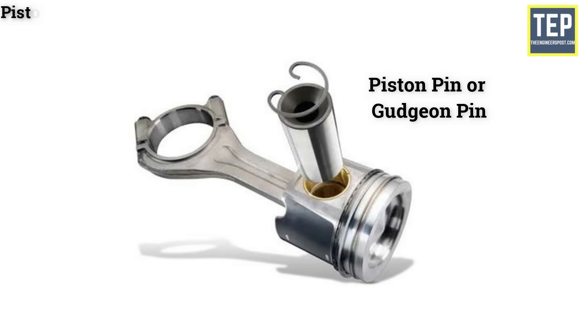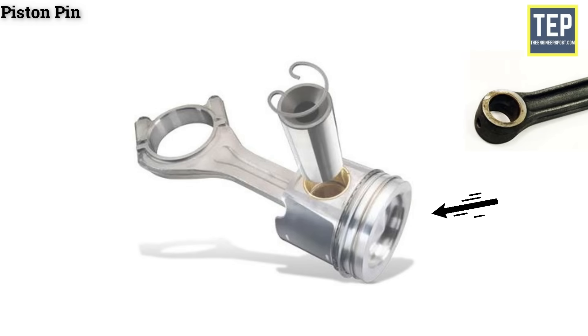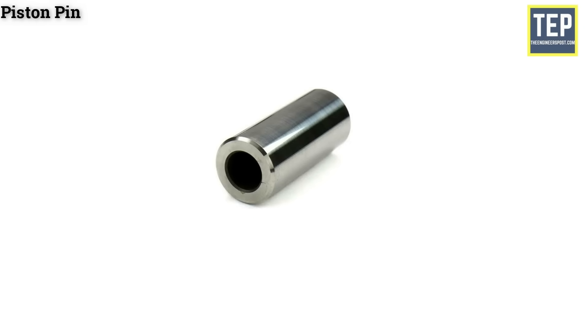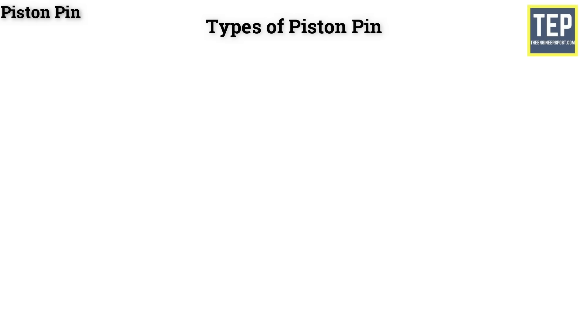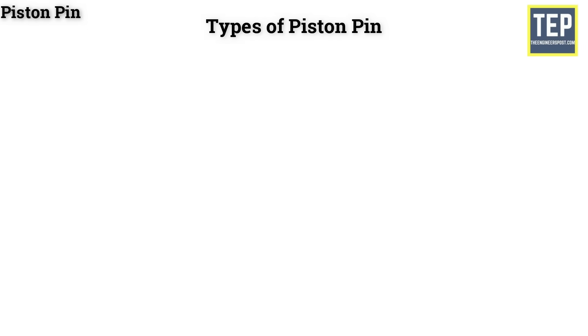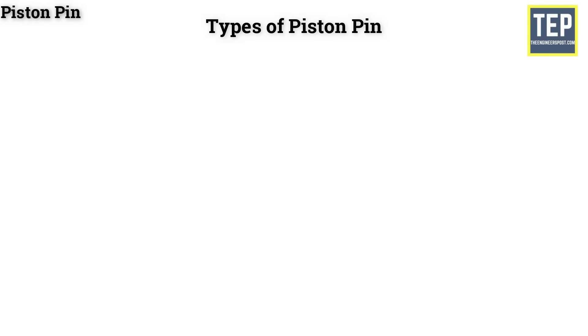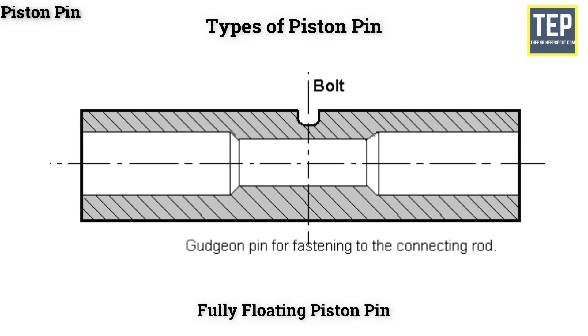The piston pin, also called wrist pin or gudgeon pin, connects the small end of the connecting rod and the piston. It is made hollow to reduce weight and is made from case hardened steel. There are three types: the set screw type, fastened to the piston by a set screw; the semi-floating piston pin, fastened to the connecting rod with a clamp screw; and the fully floating piston pin, which floats in both the piston bosses and the small end of the connecting rod, prevented from contacting the cylinder wall by two circlips.